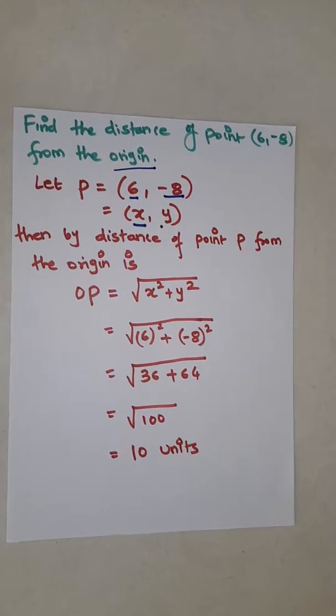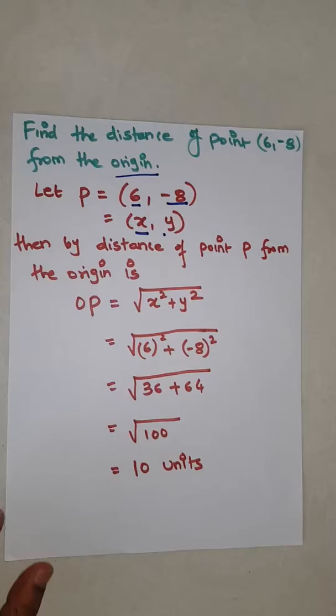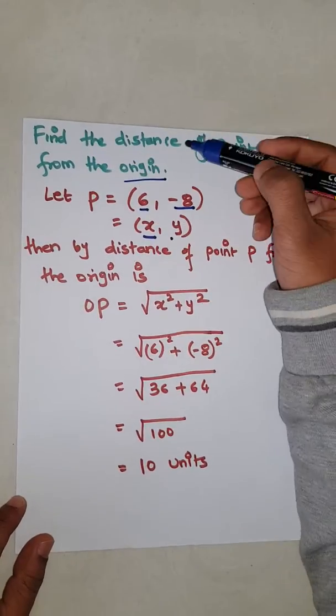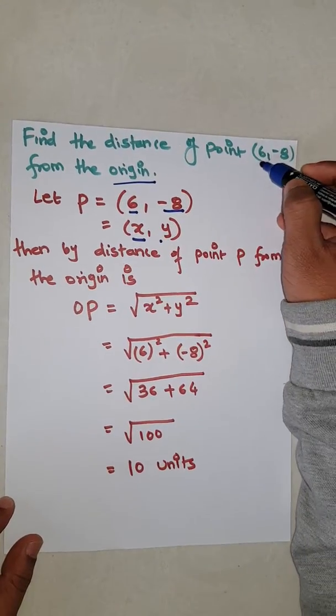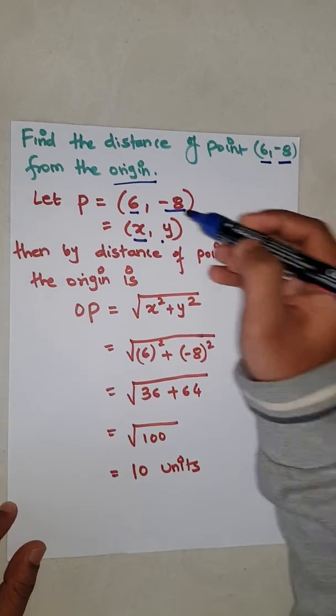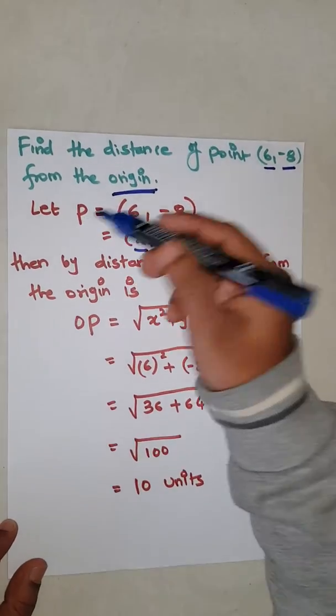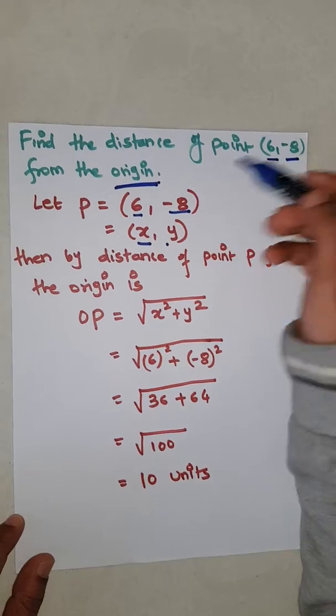Hello friends, today's topic is point and distance. The question is: find the distance of a point that is six comma minus eight from the origin. Let's say point P is the name for this value.